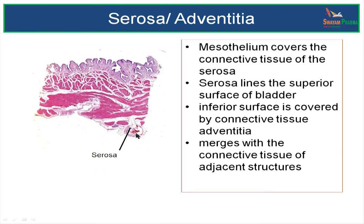The last or outermost layer is serosa or adventitia. Please note: serosa lines the superior surface of the bladder, while the inferior surface is covered only with connective tissue, called adventitia. Serosa, which lines the superior surface, has got connective tissue and a mesothelium. Mesothelium is nothing but simple squamous epithelium.